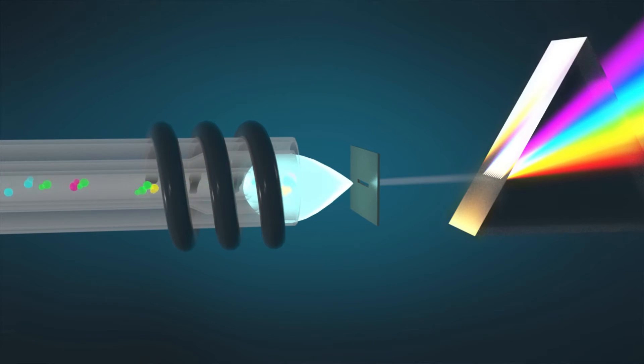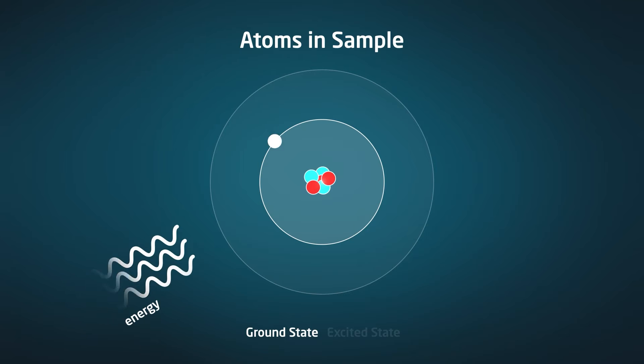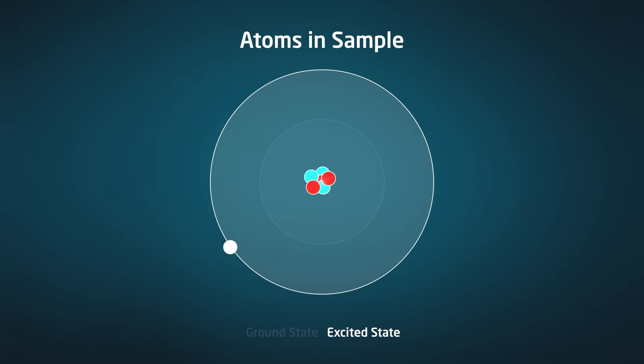The sample absorbs energy from the plasma, which excites the atoms in the sample, causing their electrons to move to an excited state. When the atoms return to their ground state, they emit a wavelength of light that is specific to that type of element.